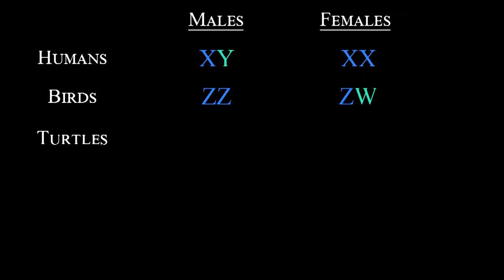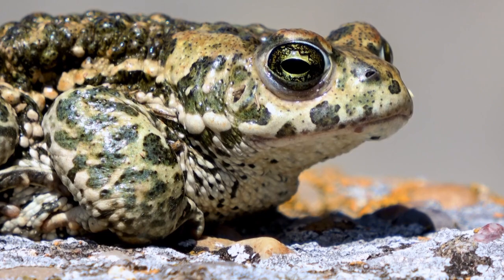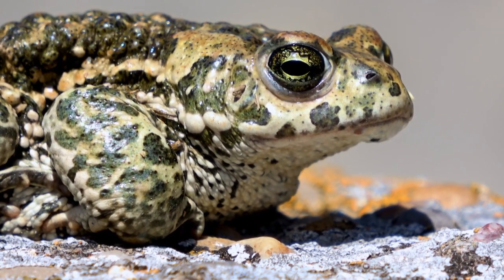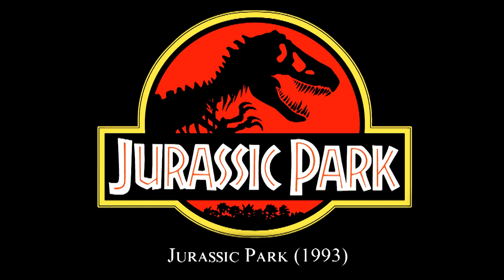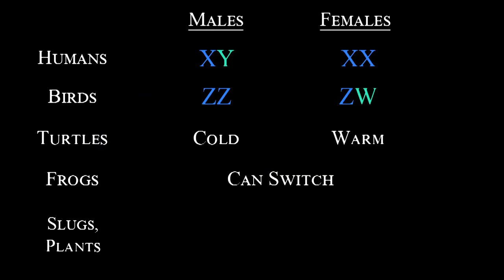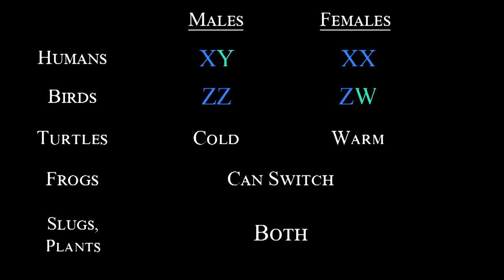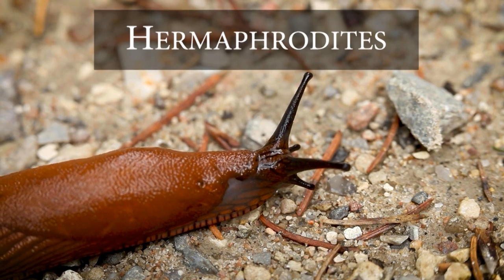In turtles, sex depends on the temperature of the egg you hatched in, not chromosomes. Some animals can switch from making eggs to making sperm. Some frogs can switch between being male and being female. This is a plot point in the movie Jurassic Park. And some animals produce both sperm and eggs. They're both male and female. They're called hermaphrodites. Slugs and plants are hermaphrodites.